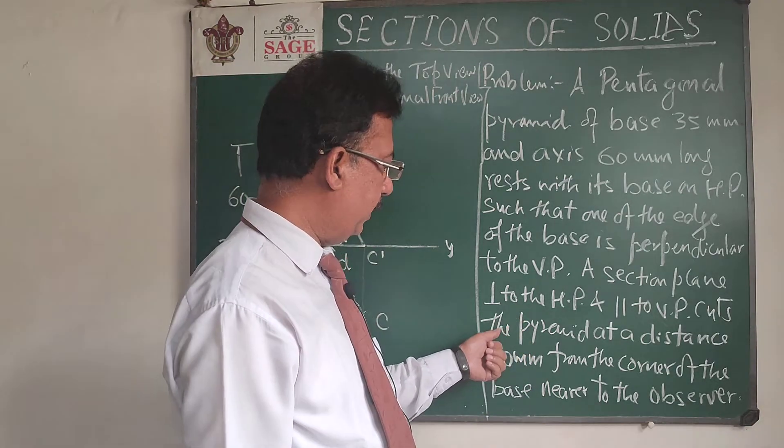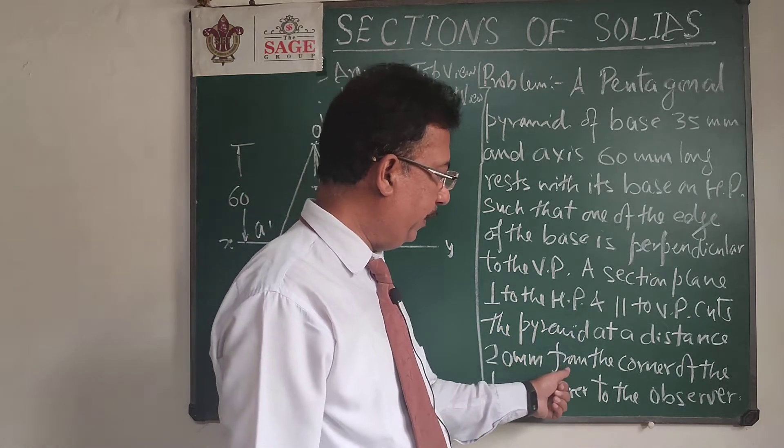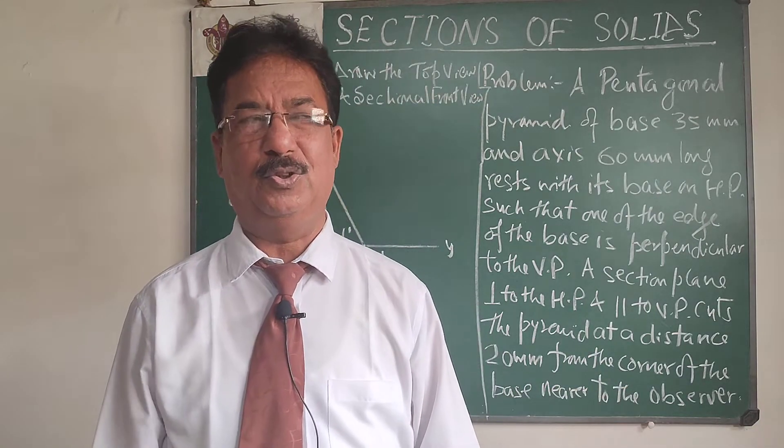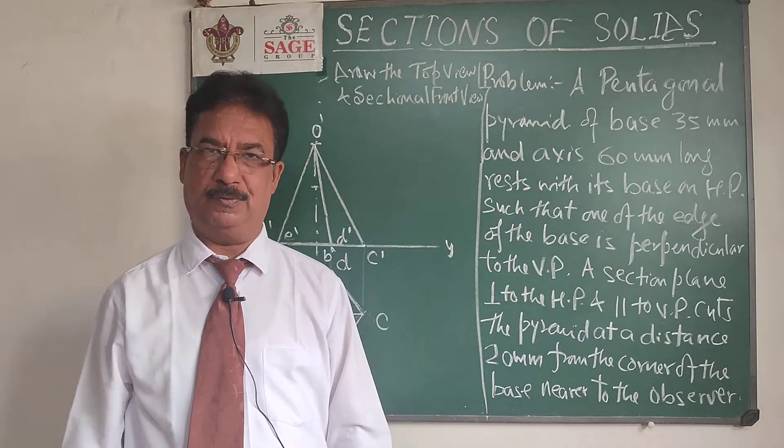The position of the cutting plane will be, they are saying, it cuts the pyramid at a distance 20 mm from the corner of the base nearer to the observer. So this time in this problem, they are giving the position of the plane with respect to the observer, means you.